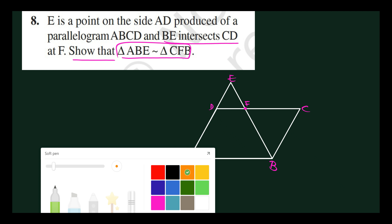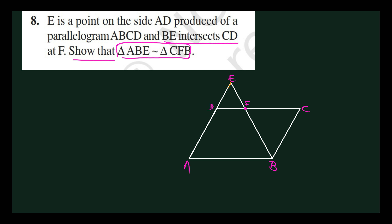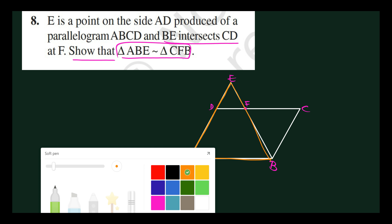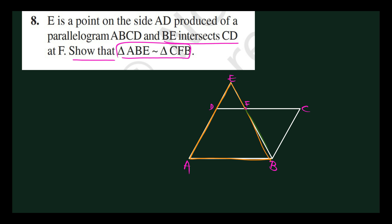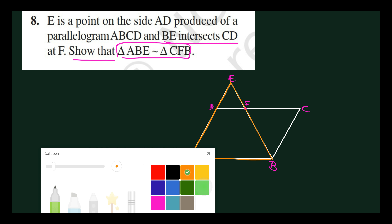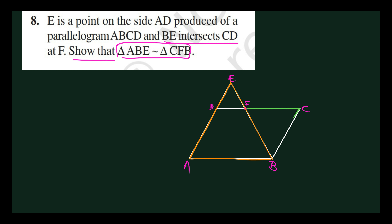Triangle ABE is the big triangle and triangle CFB is the smaller one. In triangle ABE and triangle CFB, you apply the parallelogram property — parallel lines with a transversal give alternate interior angles.